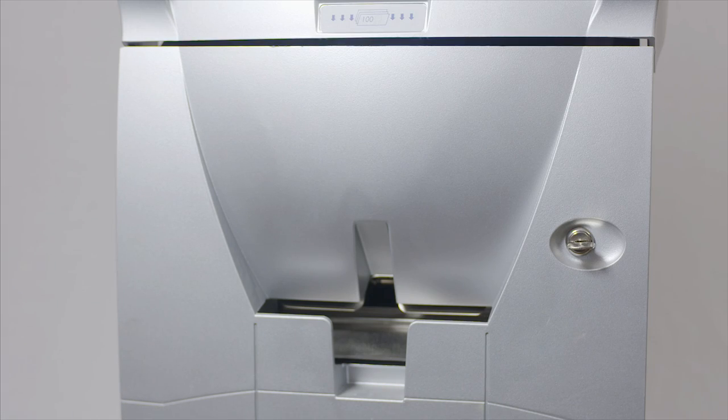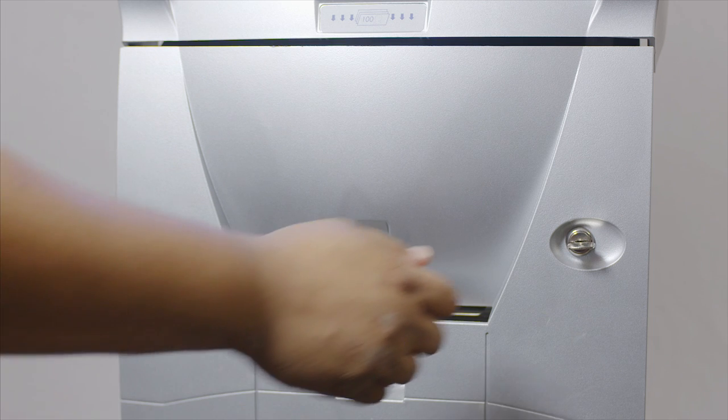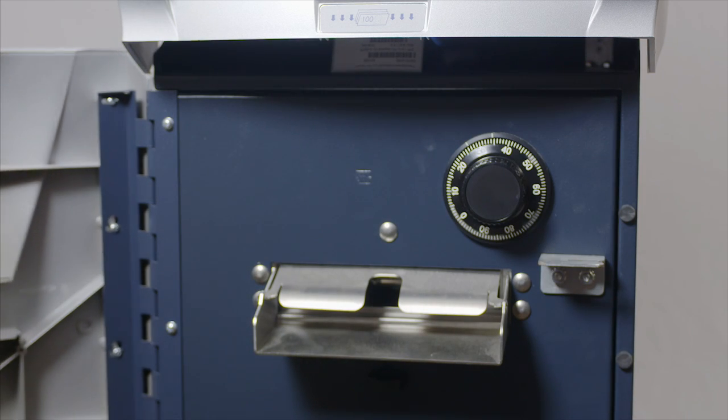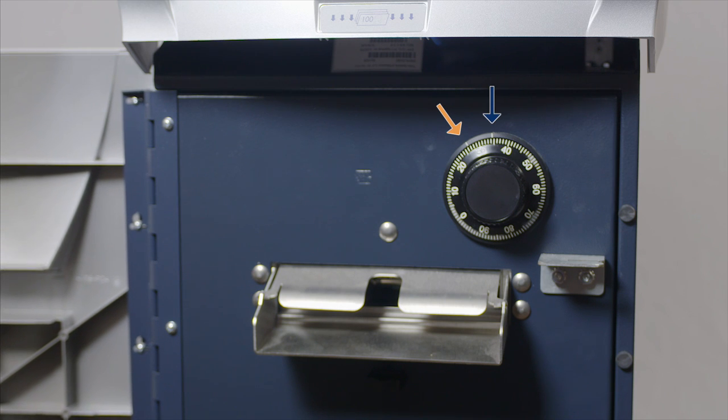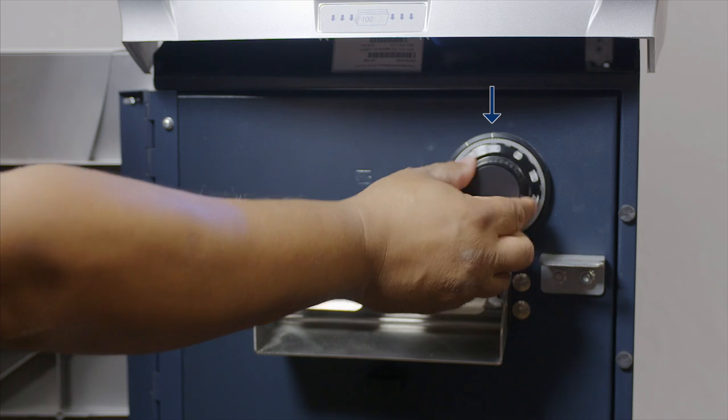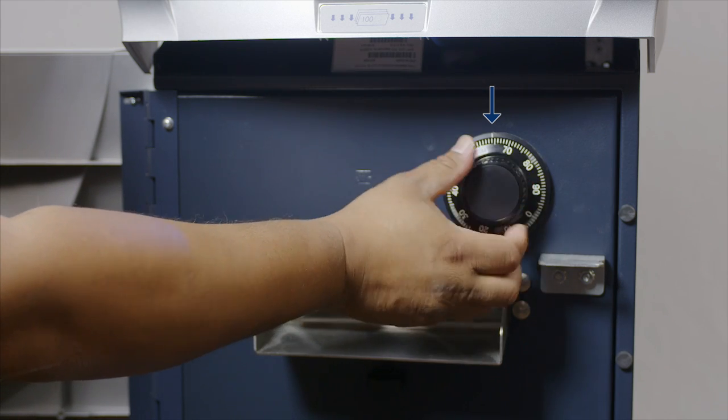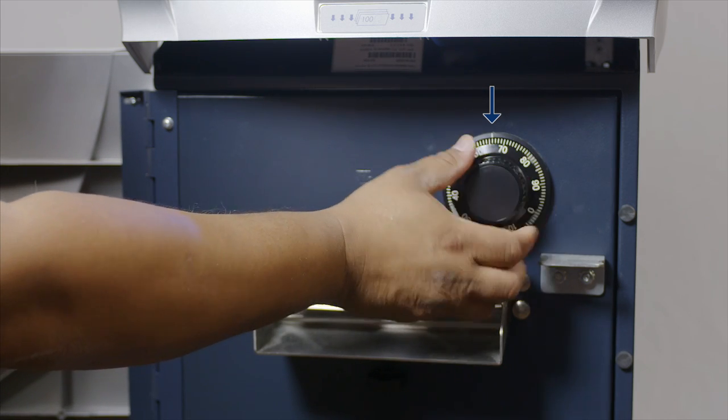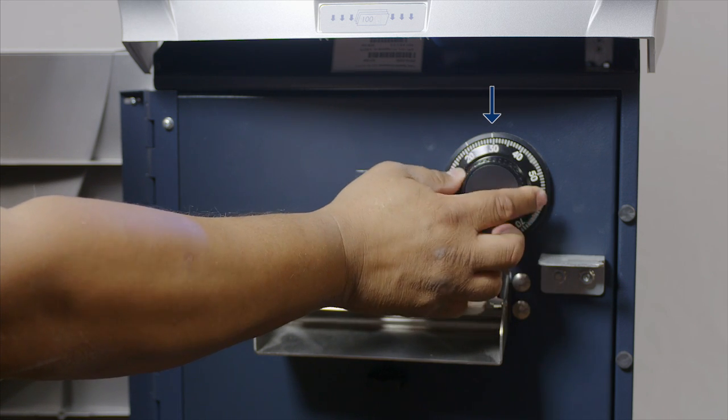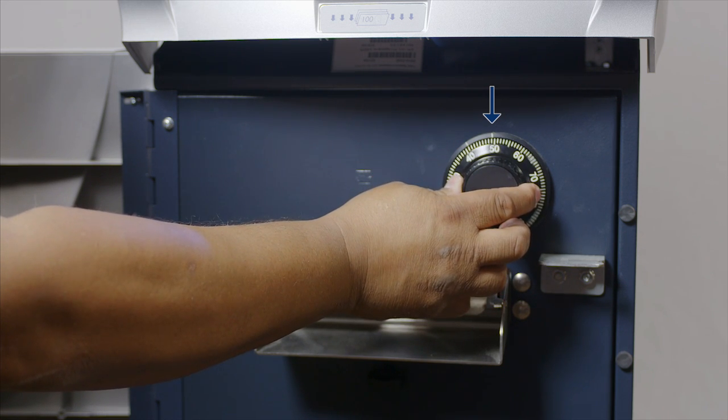To change the combination on your mechanical lock, open up the fascia. You have a change index and an open index on your dial. Using the open index, turn your lock counterclockwise four times and on the fourth time stop at 50. 50 is your factory default.